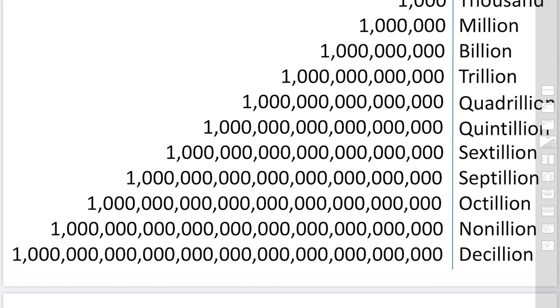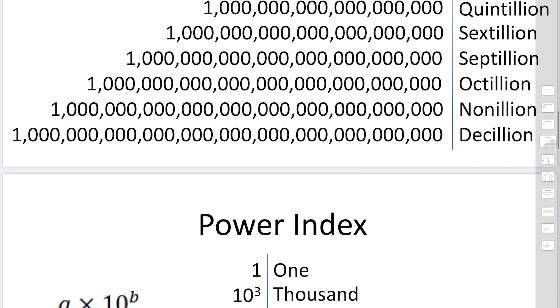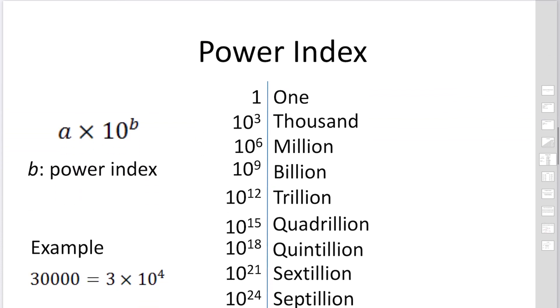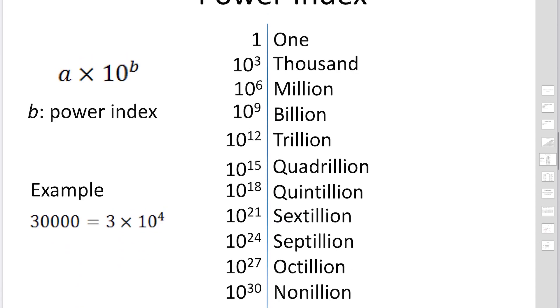So we often use the power index to describe big numbers and small numbers. The expression is a times 10 to B, where we call B the power index. Using the power index, all big numbers can be expressed easily.